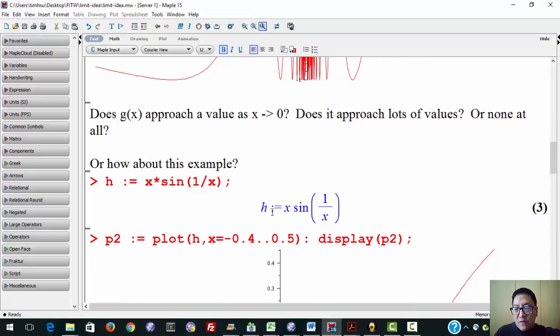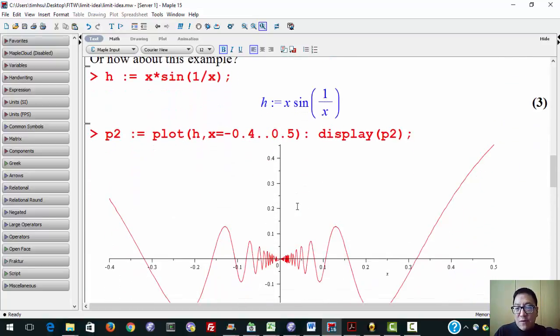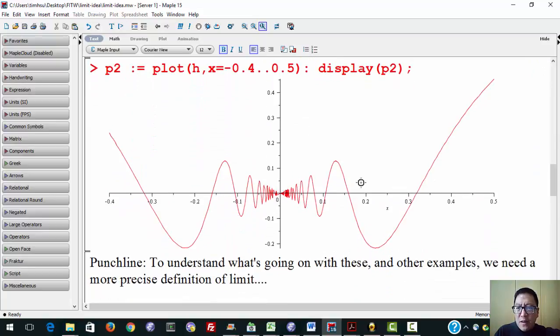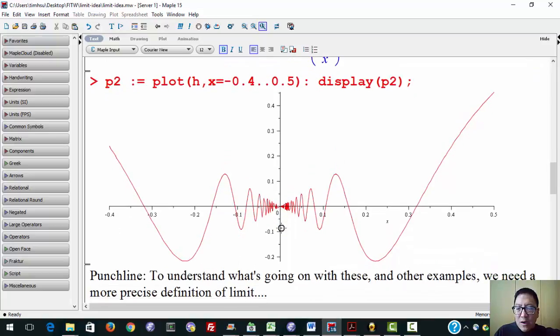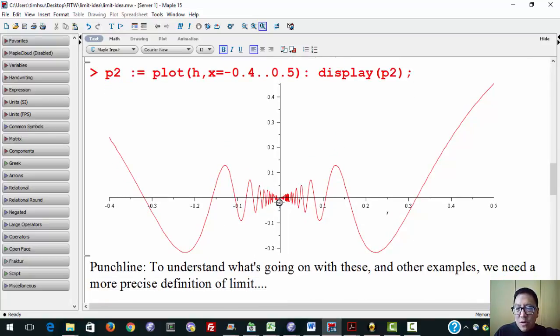Or how about this example? So this is similar looking, h(x) equals x times the sine of 1 over x. Now this, even though this has this infinitely wiggling behavior over here, I hope you can sort of see that the wiggles become smaller and smaller and smaller. It never quite just settles down and goes towards 0, the y values. But it seems like something's approaching well. I don't know. I mean, so if you try to approach this kind of naively just from just thinking about it off the top of your head, it sort of doesn't work. So to understand what's going on with these and other examples, we're going to need a more precise definition of limit.